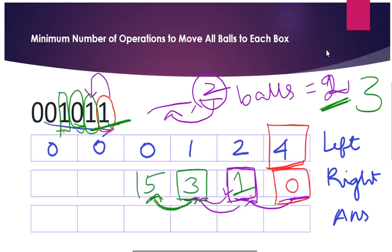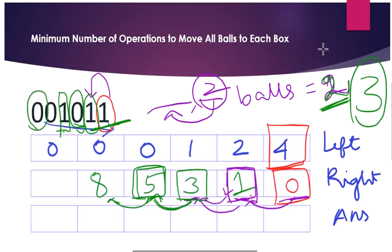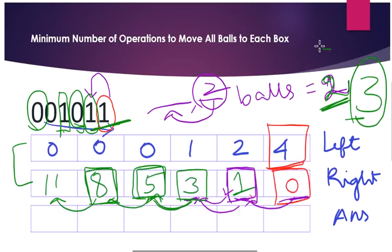Continuing the right pass, at each cell we accumulate the steps from the right. So far steps made are, for example, 8, and with 3 balls encountered we add 3 more steps. Filling in values like 8, 5, 4, 3. When we sum left and right arrays together, that gives us our final result array.